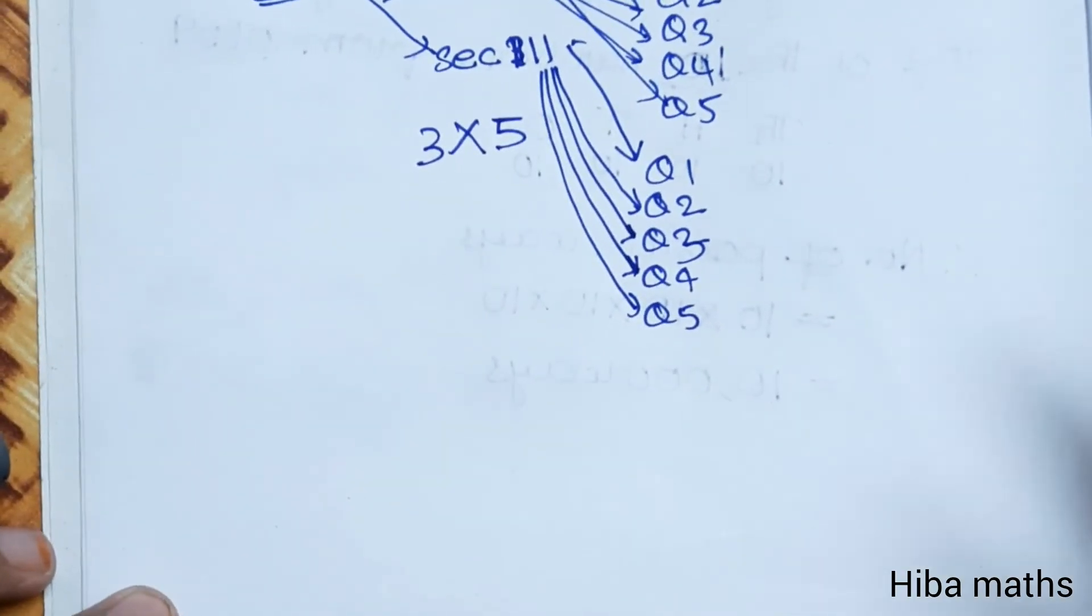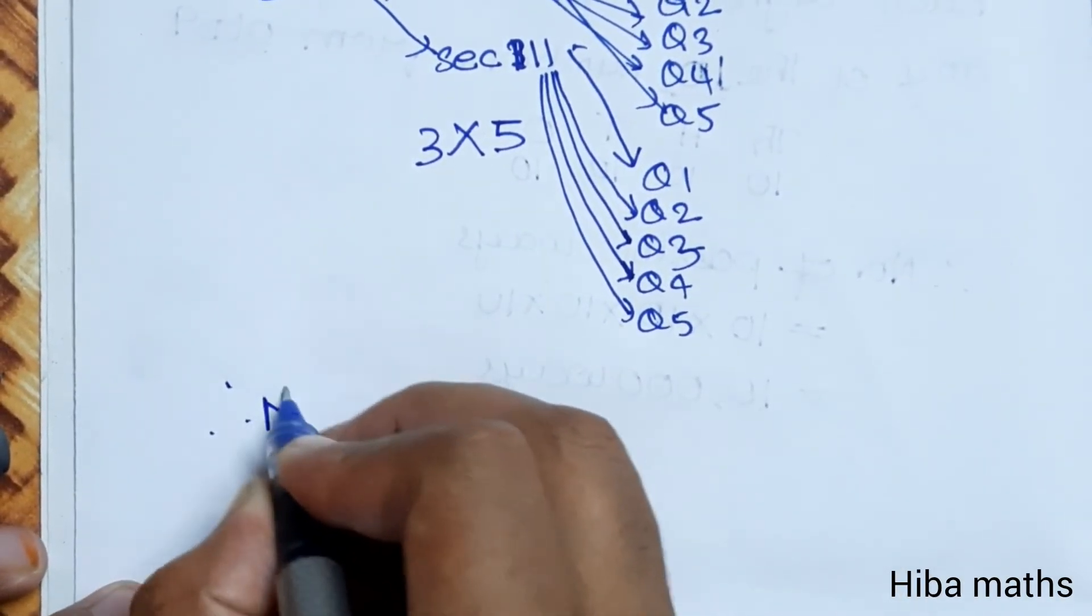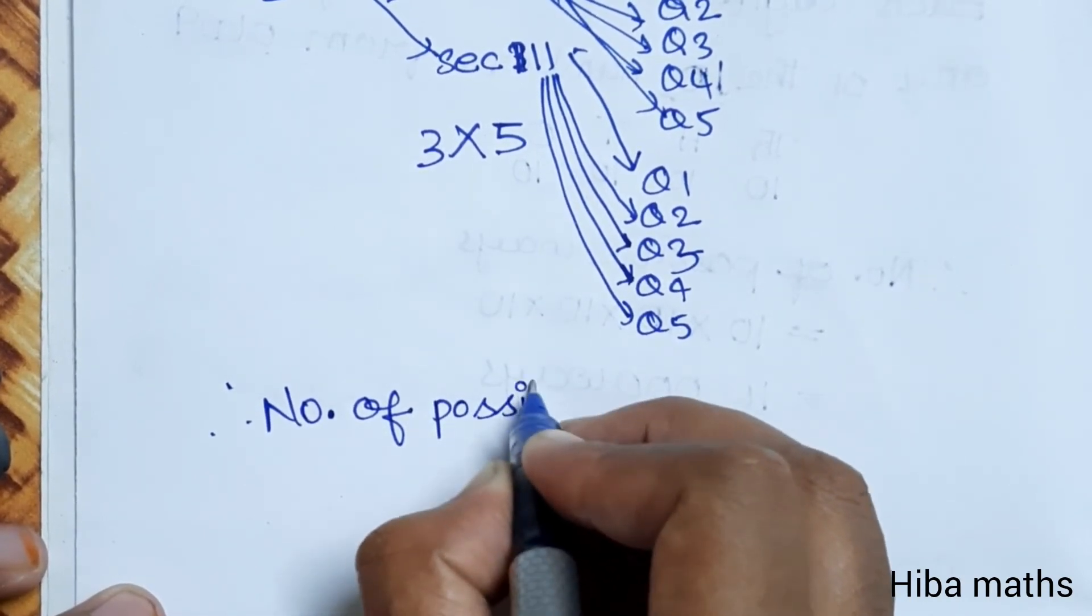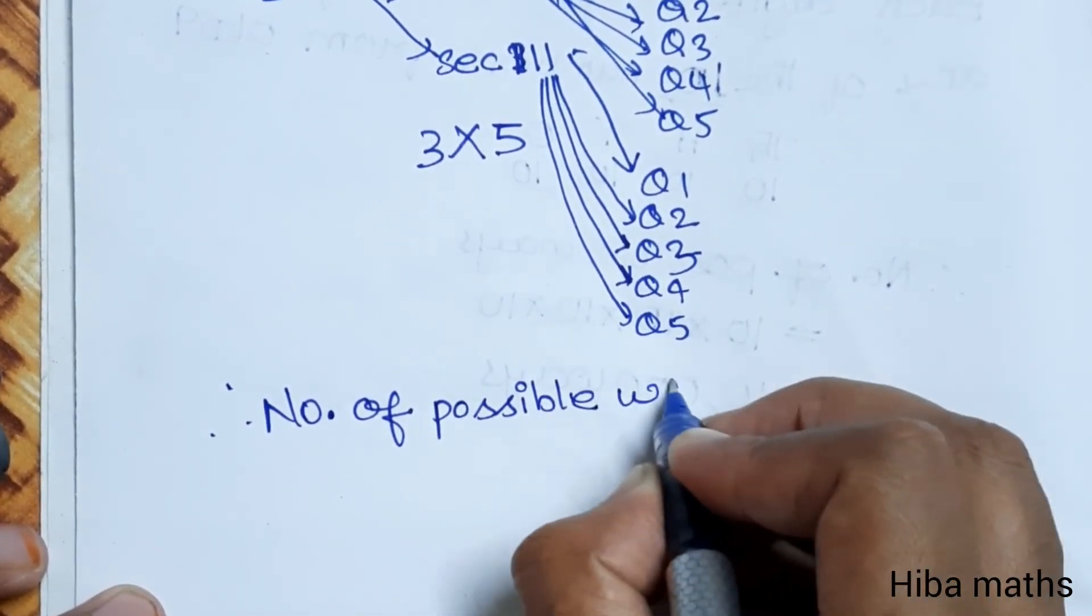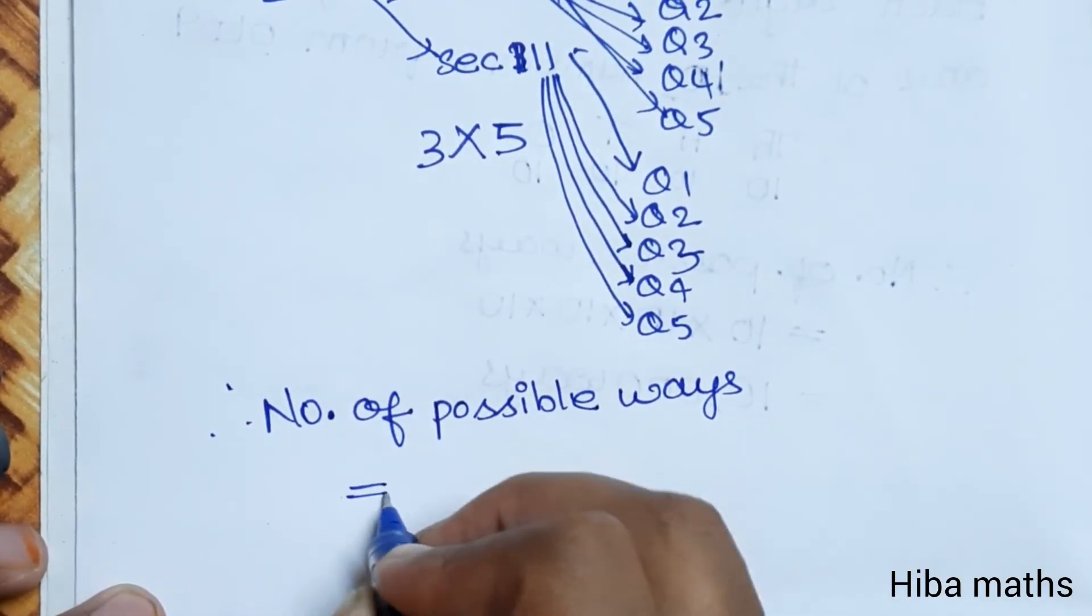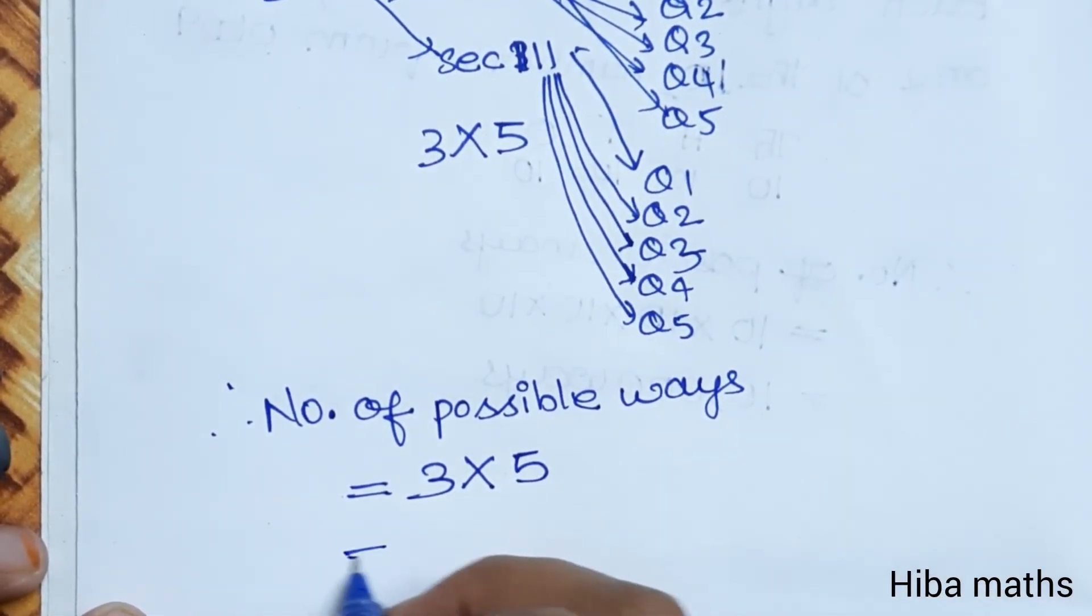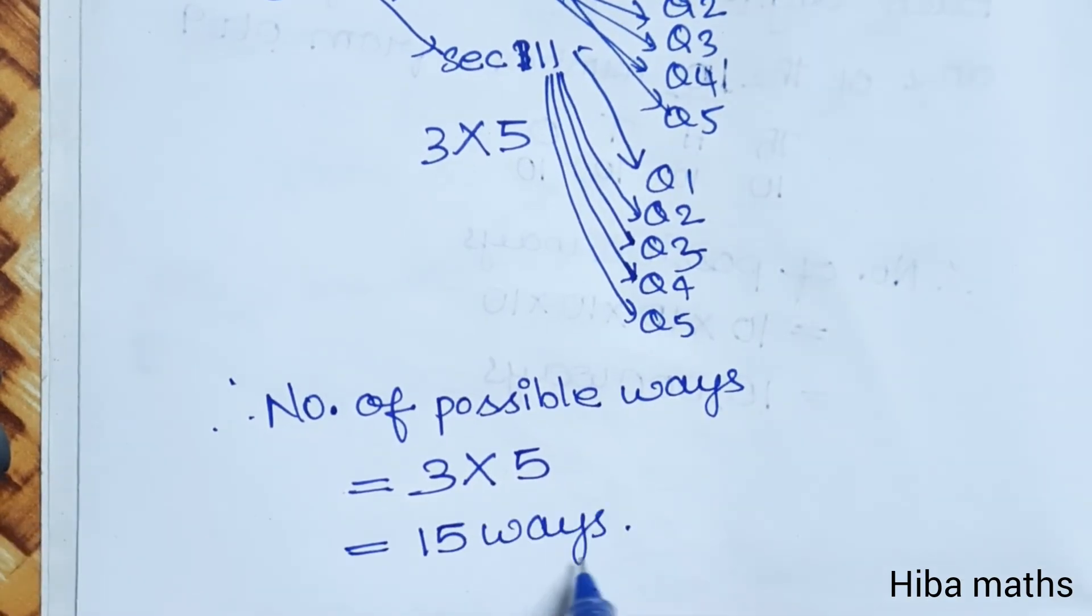Number of possible ways. Therefore, number of possible ways is equal to one session. You have five questions. So, three, five ways are 15 ways.